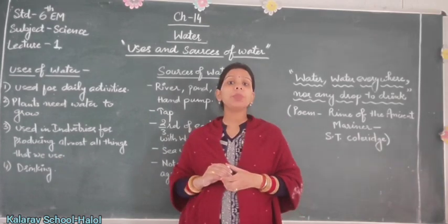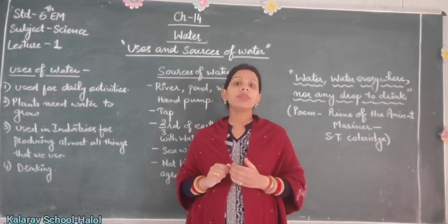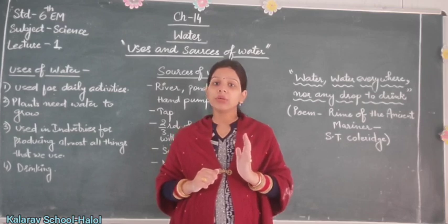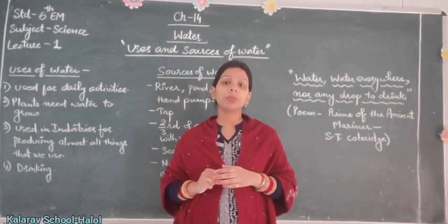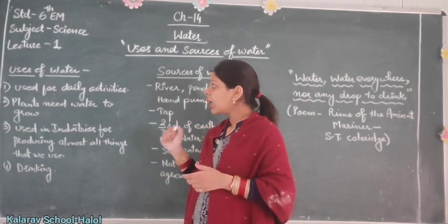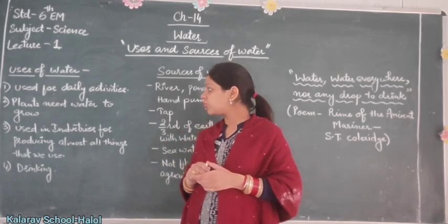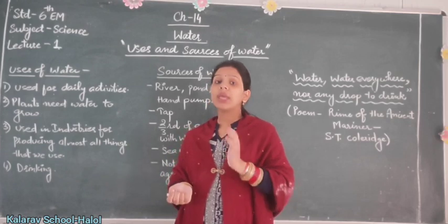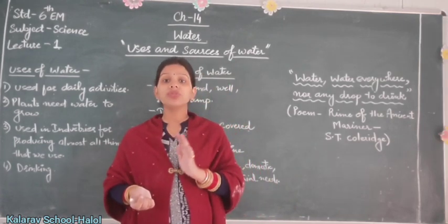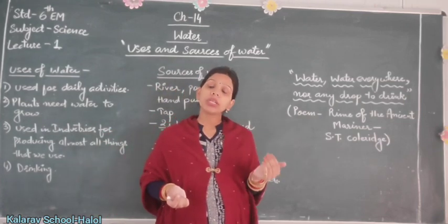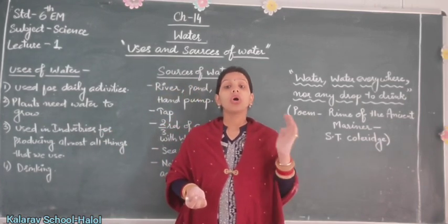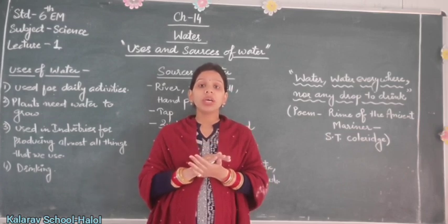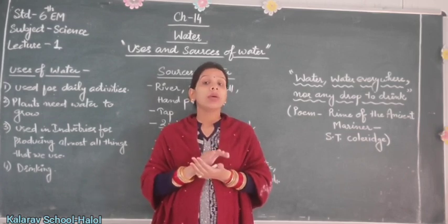Number two: plants need water to grow, and plants provide us pulses, vegetables, fruits, and other food items — all of this is possible only through water. Number three: water is used in industries for producing almost all the things we use. Water is not only used for drinking but is essential for all the activities and things we need in our day-to-day life. So it is our duty to save water and use it wisely.